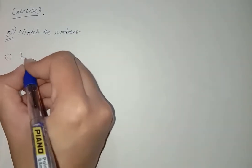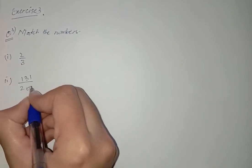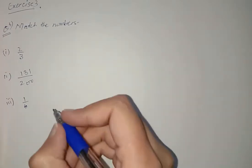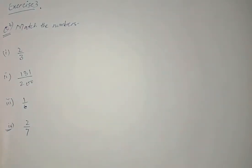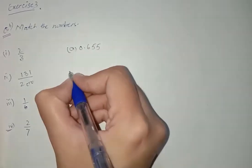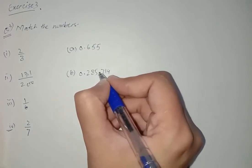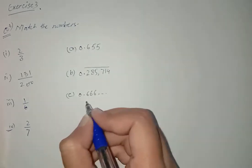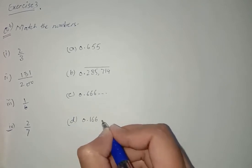1 is 2/3, 2 is 131/200, 3 is 1/6, 4 is 2/7. Now move towards the next side. A is 0.655, B is 0.285714, C is 0.666 dot dot dot, which means 666 infinite. D is 0.166 and also infinite.